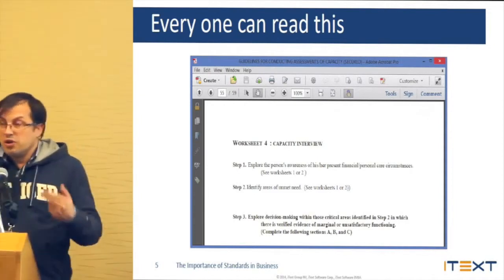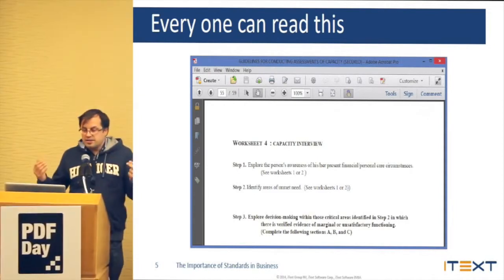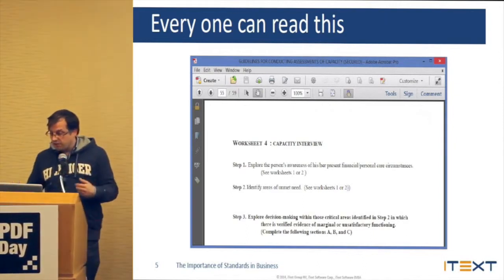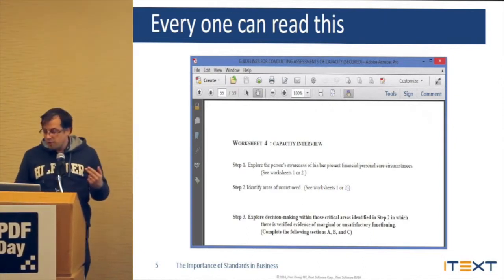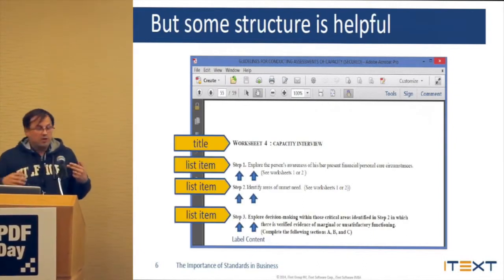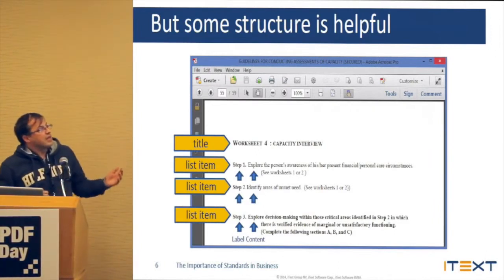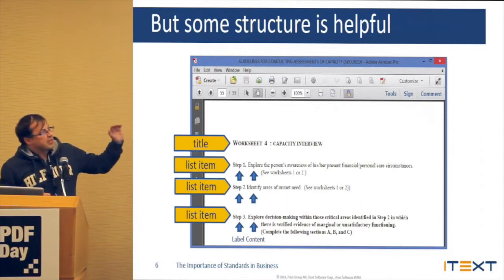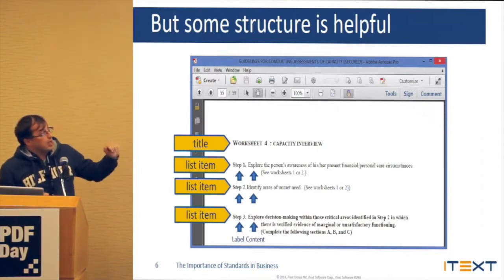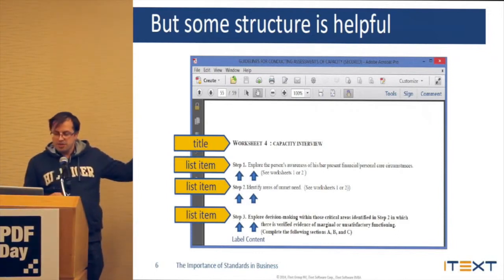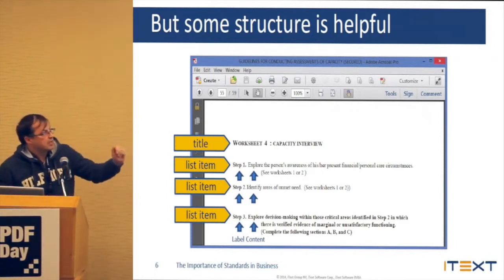If I would ask you all to shut your eyes, and I would read this text — Worksheet 4, Capacity, Interview, and so on — as you are humans, you would understand that there's structure in this document. You would understand that the first thing I say is a title. And then because I say step one, step two, step three, you would know I'm giving you list items. And these list items have labels, and these list items have content.